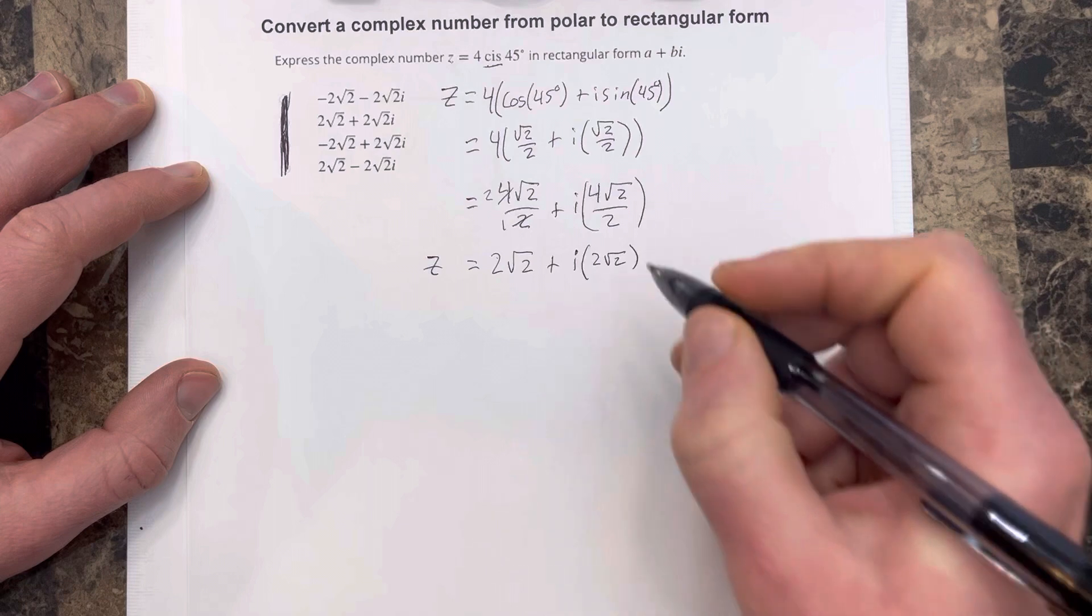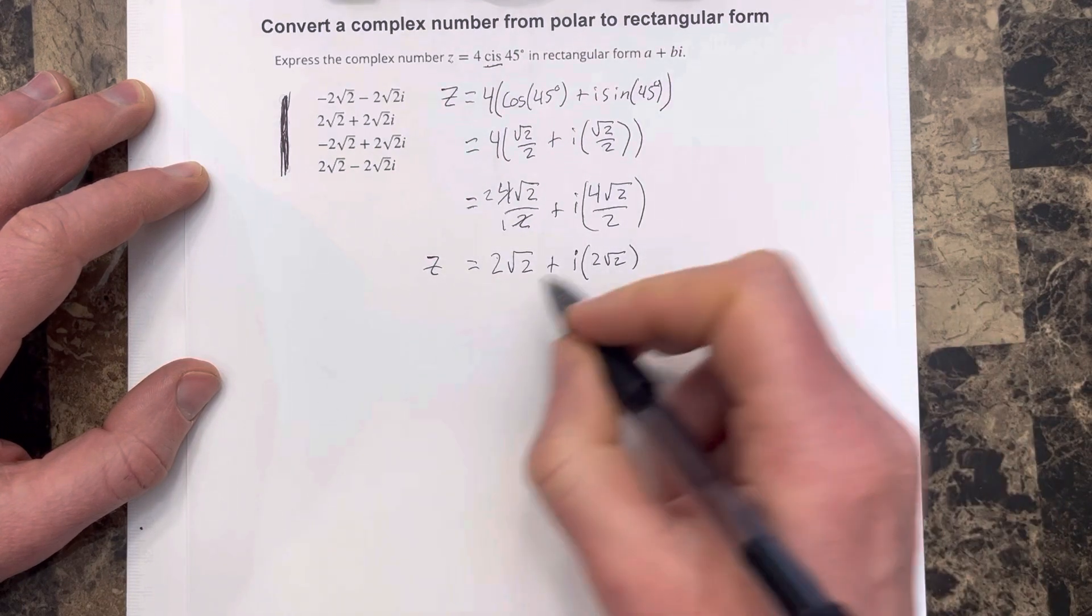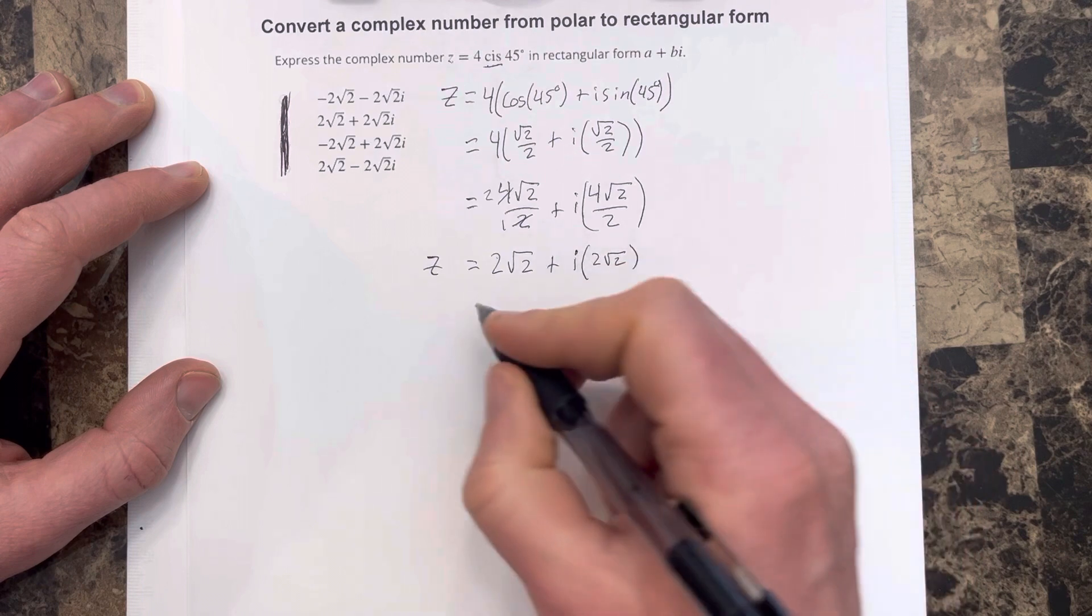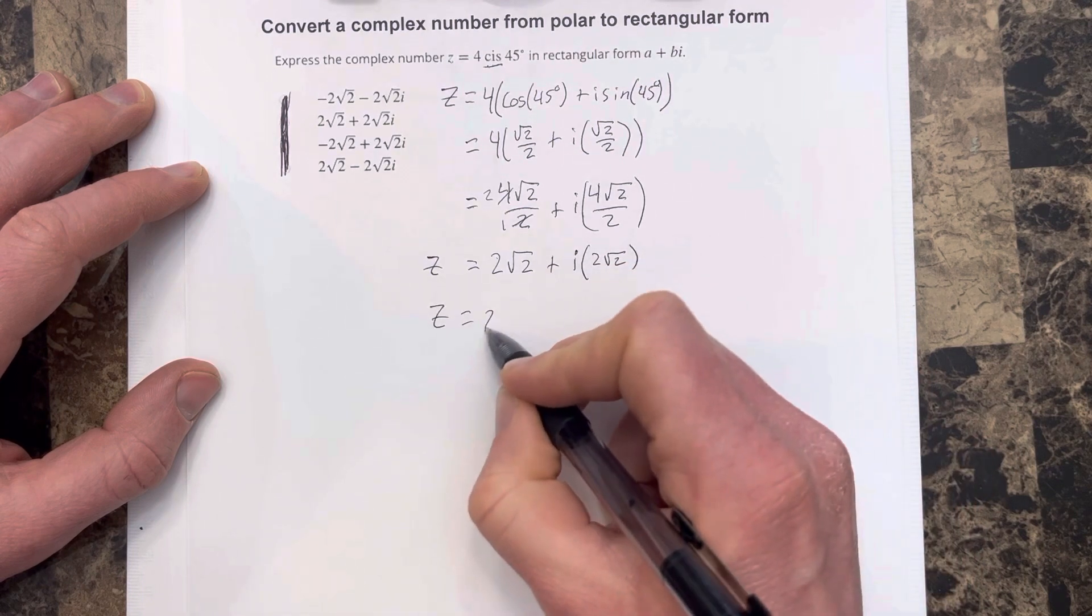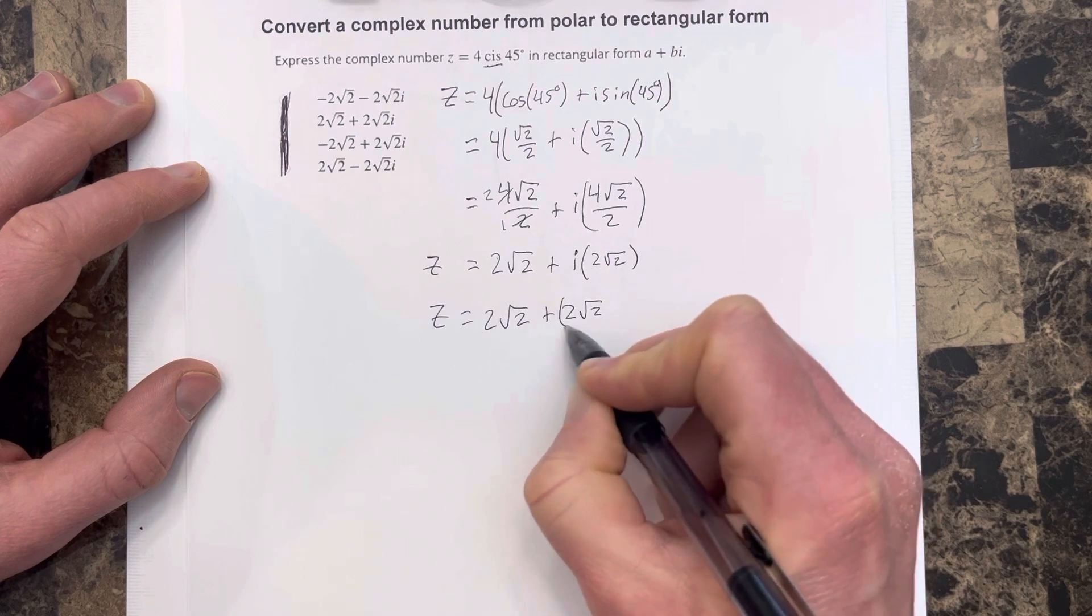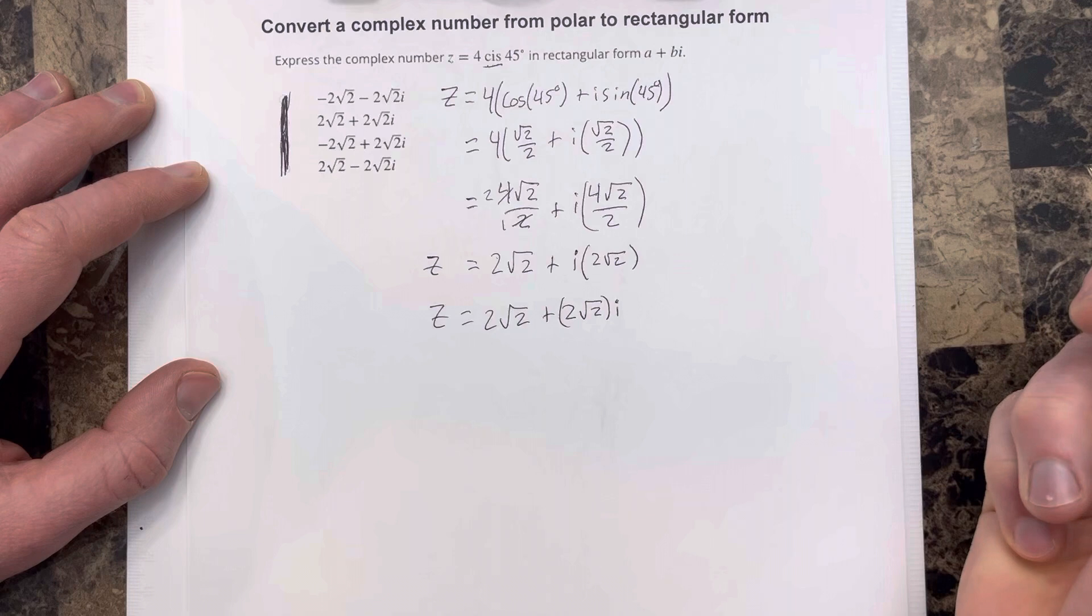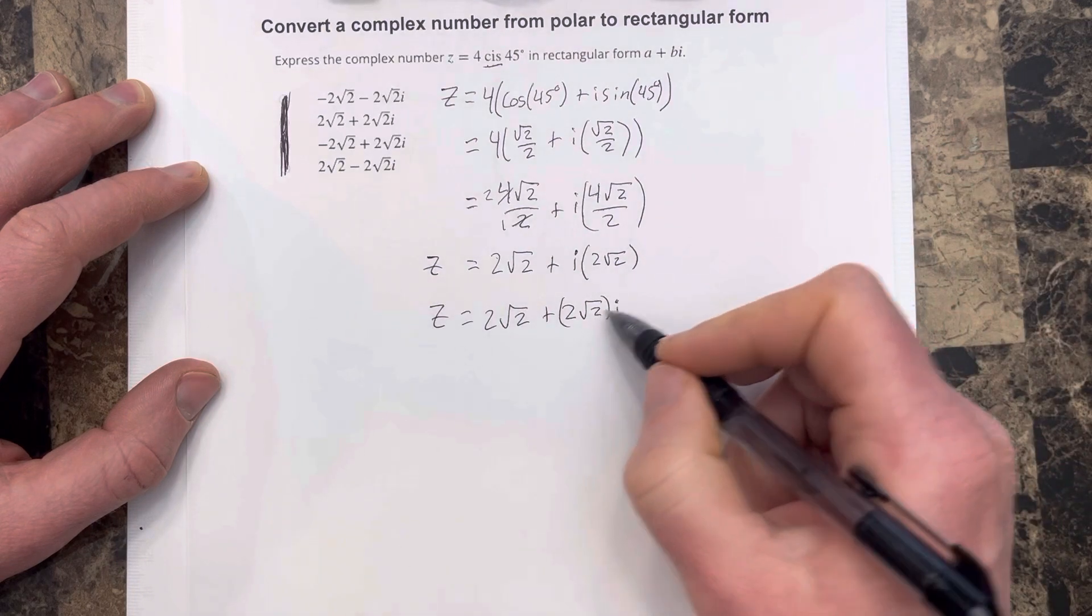And they're probably going to want this to say like 2 root 2I on the outside. I kind of like to leave it like this. If I do rewrite it, I'll rewrite it with some parentheses, because I don't like to just throw it on the very end, because it looks like it's inside the square root, which is kind of weird. So 2 root 2I.